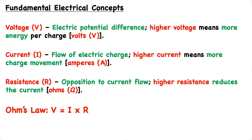For example, let's say we have a 16-volt circuit and we know that we have two amperes of current, and we're trying to determine the resistance. We can simply rearrange this expression and solve, where we would get R, the resistance, equal to 8 ohms.